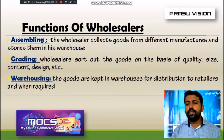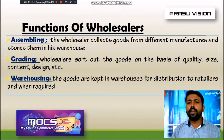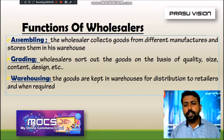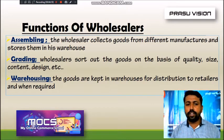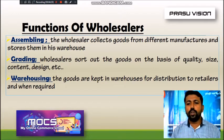The functions of wholesalers include assembling — collecting products from different manufacturers at one place and storing them in their own warehouse. Assembling is the primary function of the wholesaler. Grading means sorting and categorizing products into different grades on the basis of quality, size, content, design, price, etc.